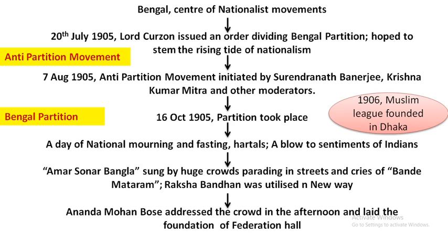It was very clear that the partition was not due to administrative reasons, but rather to curb the nerve center of nationalist sentiment and weaken it. Leaders like Surendranath Banerjee, Krishna Kumar Mitra, and Bokhi — who were all moderates — started the anti-partition movement. This movement was non-violent, following what is called the P3 formula. But this anti-partition movement yielded no result, and finally Bengal got partitioned on 16 October 1905.